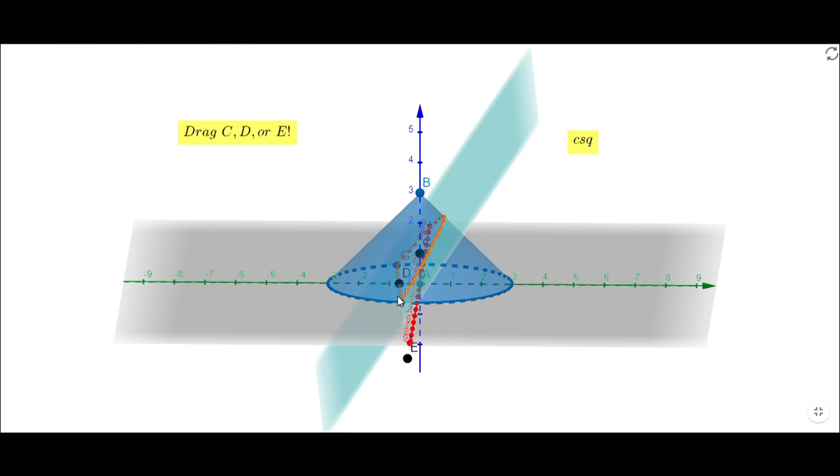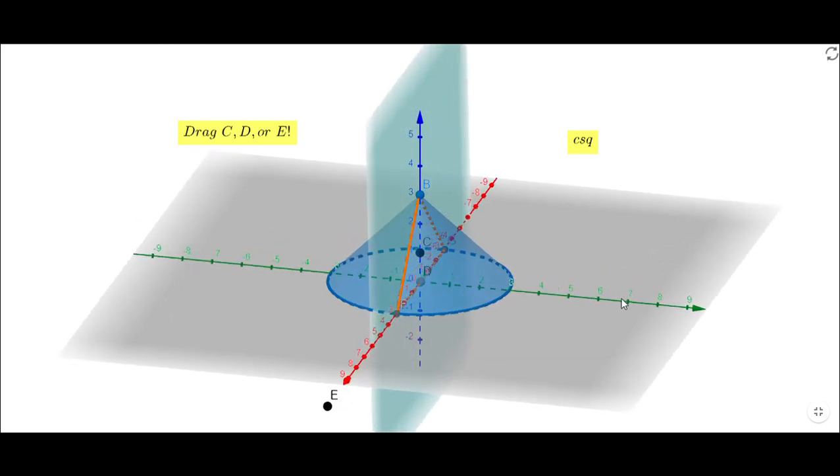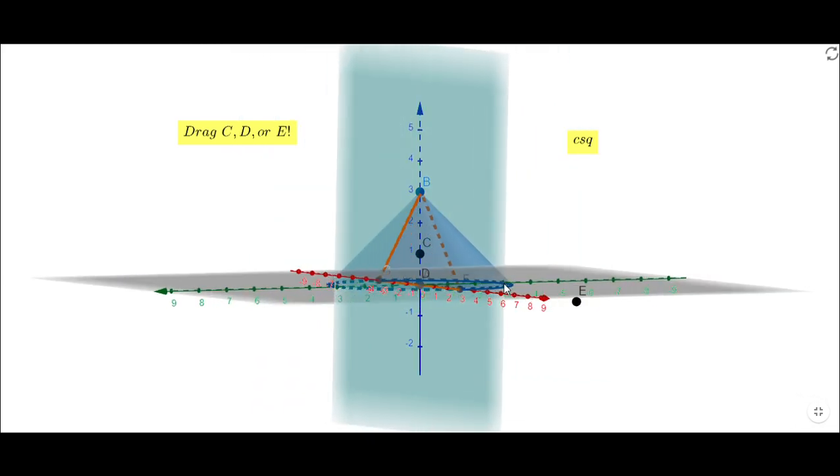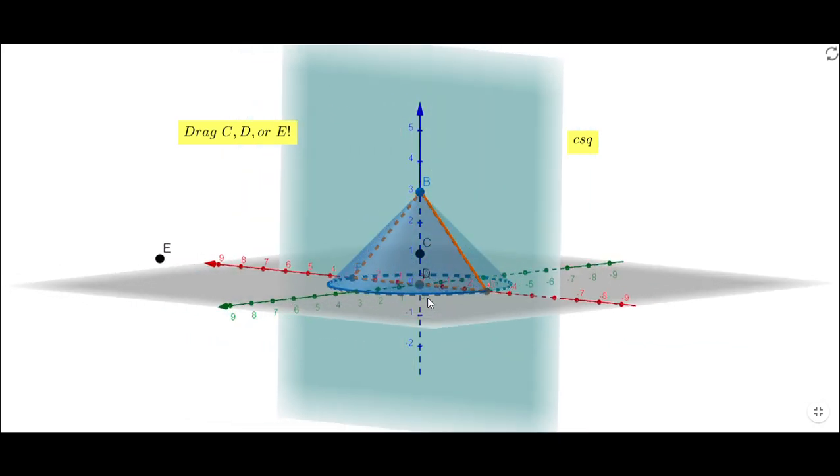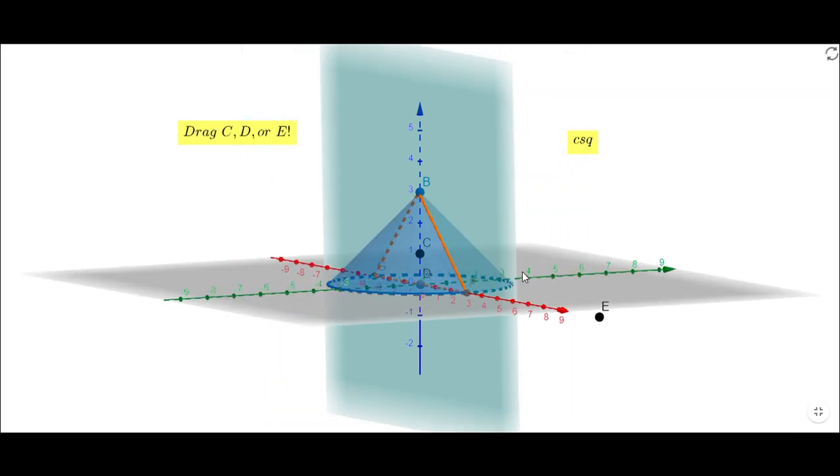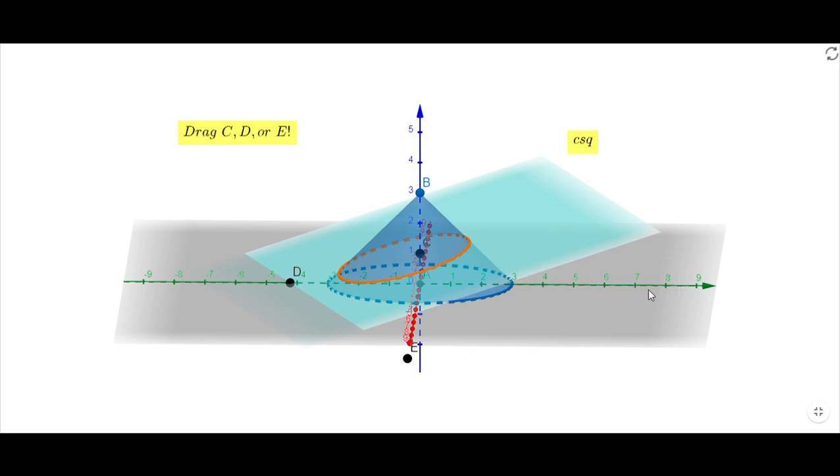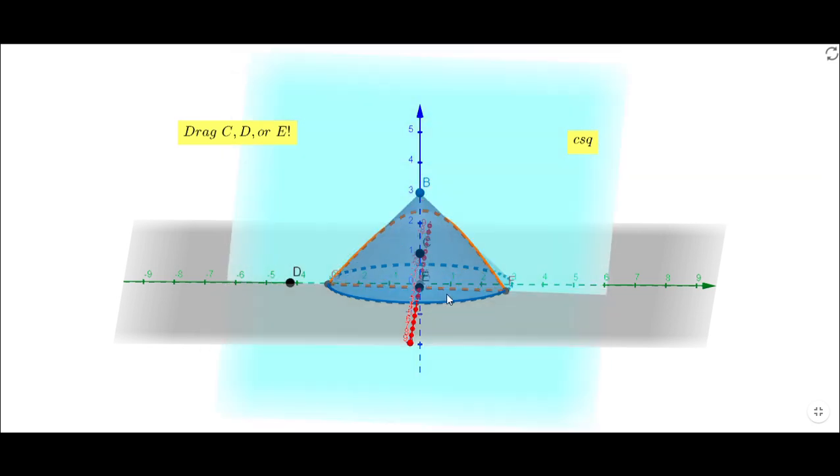We have another shape. It's very interesting to look at these cross sections, and you'll notice here we have a triangle. Let me go back to the original picture. Also, I can drag point E and get a similar object, a similar cross section. And I can drag point C and you'll notice what we get.